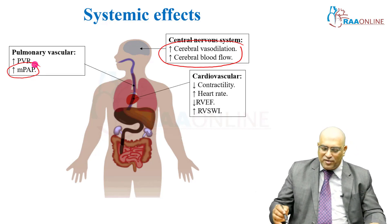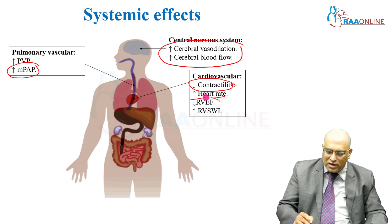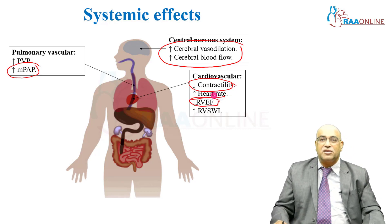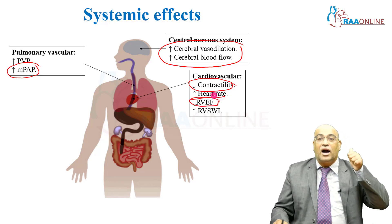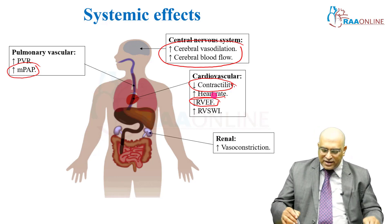In the cardiovascular system, hypercarbia decreases contractility, increases heart rate, decreases the right ventricle ejection fraction, and increases the right ventricle stroke work index.